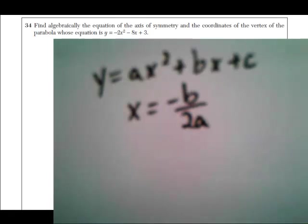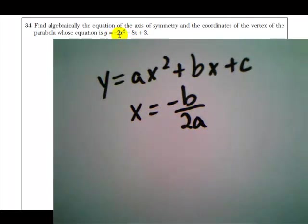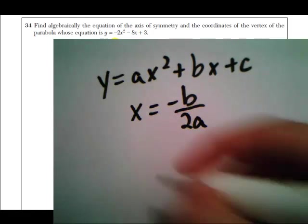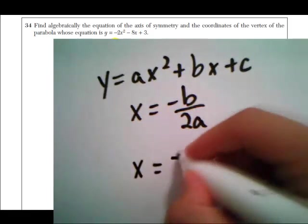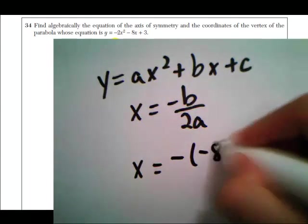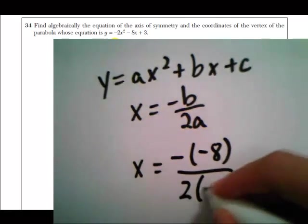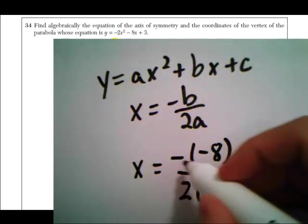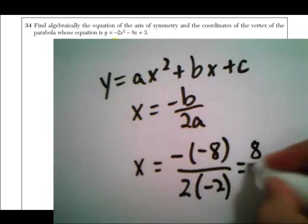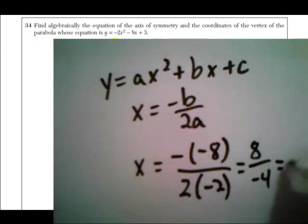the axis of symmetry is x equals negative b over 2a. So looking at this parabola, we have b is negative 8 and a is negative 2. So the axis of symmetry for this equation is x equals negative 8 over 2 times negative 2. That's going to be positive 8 over a negative 4. So x equals negative 2 is the axis of symmetry.